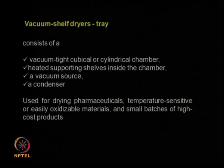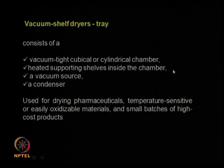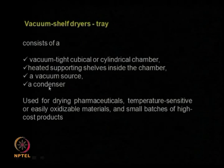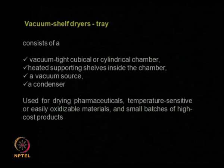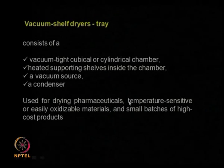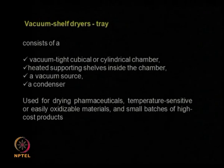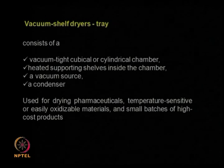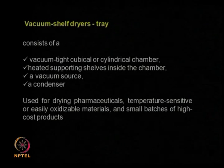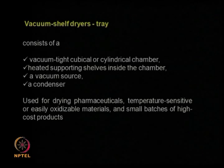The vacuum shelf dryer, also called a tray dryer, has a shelf with many trays inside a cubical or cylindrical chamber maintained under tight conditions because vacuum is applied. There is a heating source and a vacuum source, plus a condenser if you want to collect the solvent or moisture that evaporates. This is useful for drying pharmaceutical products and even temperature-sensitive products. We can use it for oxidizable materials because applying vacuum means no air inside, so no oxidation takes place. It is very useful for small batches and high-cost products because you have complete control over the drying process.